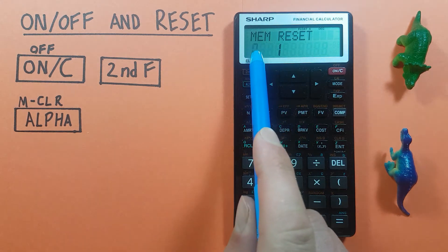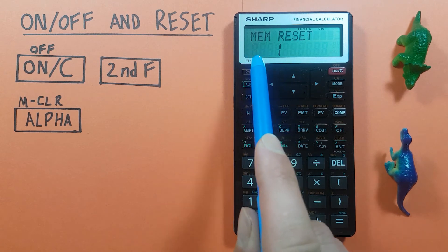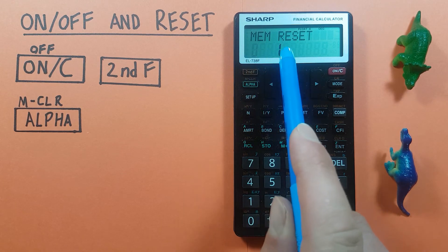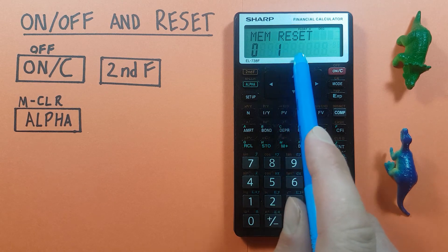If you press zero here, that'll clear the memory and any stored variables that you have on this calculator. Alternatively, you can press one for reset. This will reset your calculator to its original state.